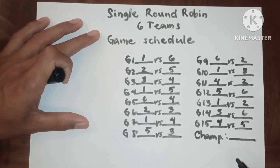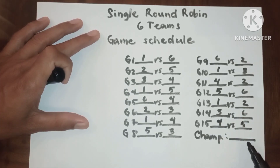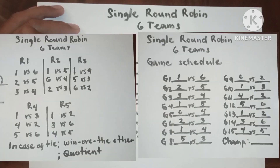The champion must be placed here. This is the pairing and game schedule for single round robin in six teams.